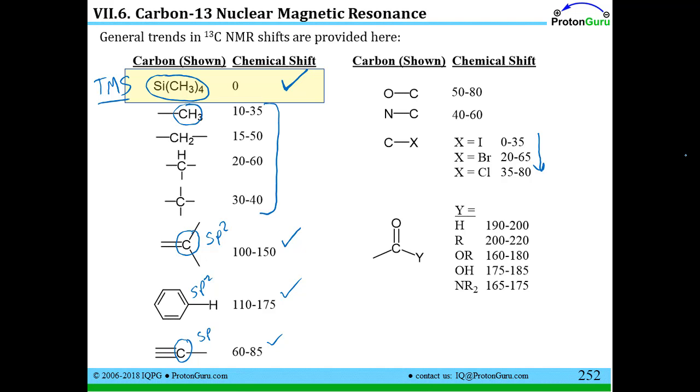And if you put a double bond to the carbon, you've got an oxygen doubly bound to it and you have an SP2 hybridized carbon, you start to get to the very high numbers, even as high as about 200 in some cases.